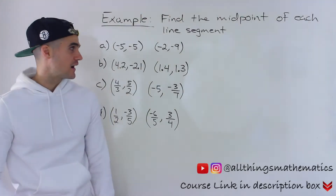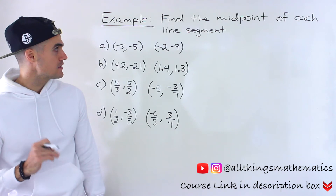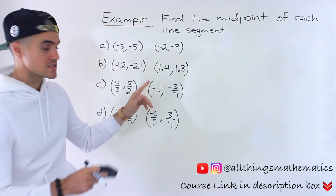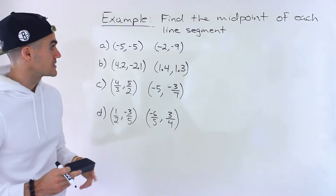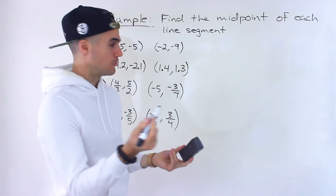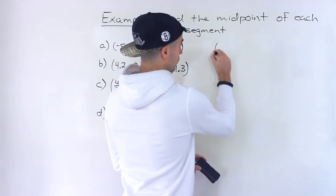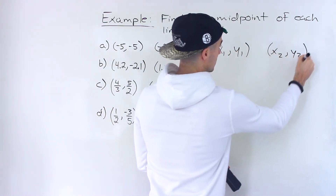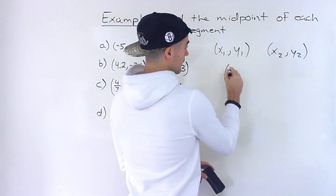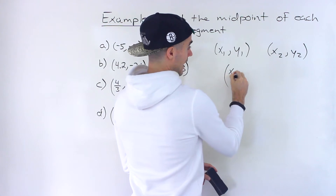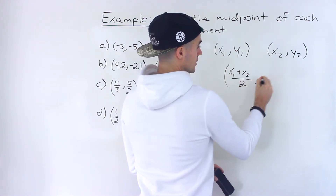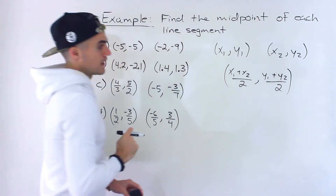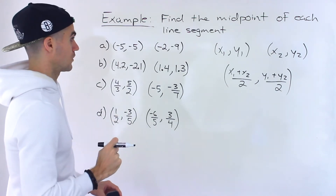Welcome back. Patrick here. In this video, we need to find the midpoint of each of these line segments. These are the coordinates of the endpoints. In general, how do we find the midpoint between two points? If we have a point (x1, y1) and a point (x2, y2), we find the midpoint by adding the x values and dividing by 2, then adding the y values and dividing by 2. That's the process we'll follow for all of these.